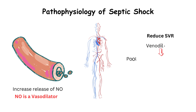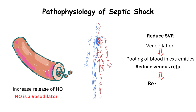The venodilation causes reduced venous return, and so stroke volume is reduced. Reduced systemic vascular resistance causes reduced mean arterial pressure, resulting in inadequate perfusion to the organs.